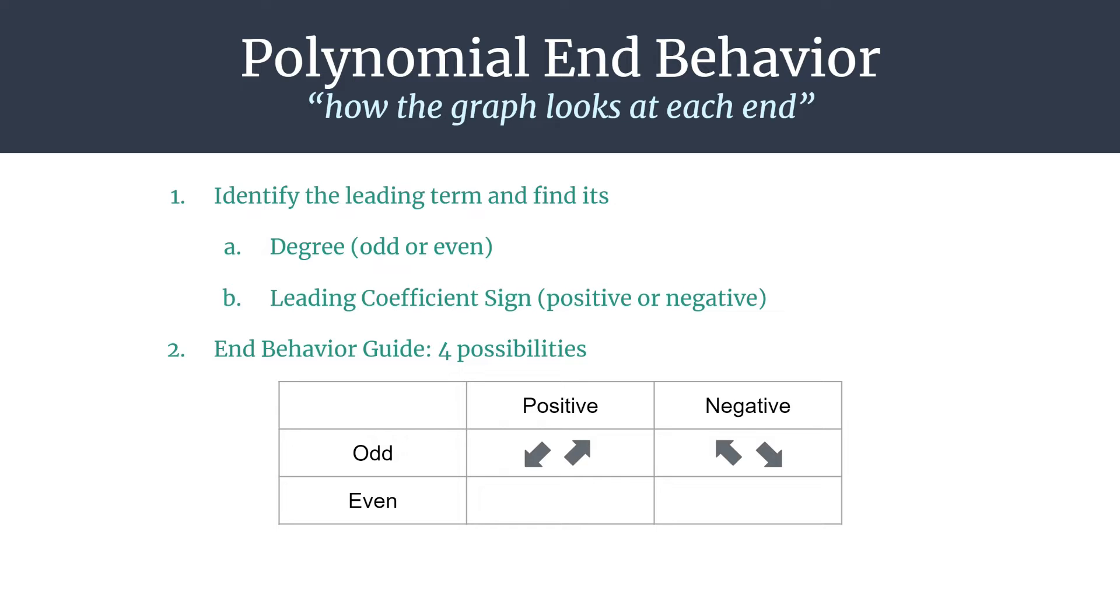Good thing to know, and we'll talk more about that in just a minute. If it's even for its degree and it has a positive leading coefficient, both ends or arrows for the graph will be pointing in the upward direction or the positive direction. And if it's even and negative, it will be both arrows or both ends pointing down. And notice again that's just a vertical reflection of the behavior for an even degree with a positive leading coefficient graph.